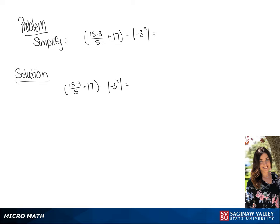If we simplify those, we are going to get 45 over 5 plus 17 in parentheses, minus the absolute value of negative 27.